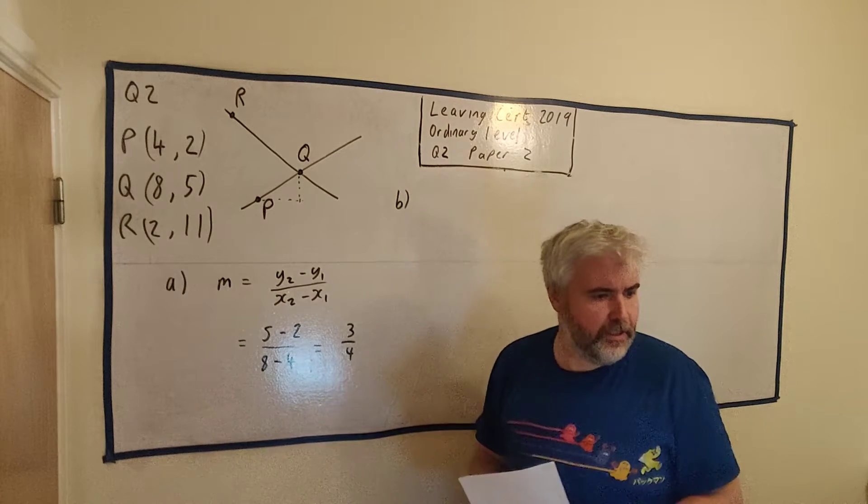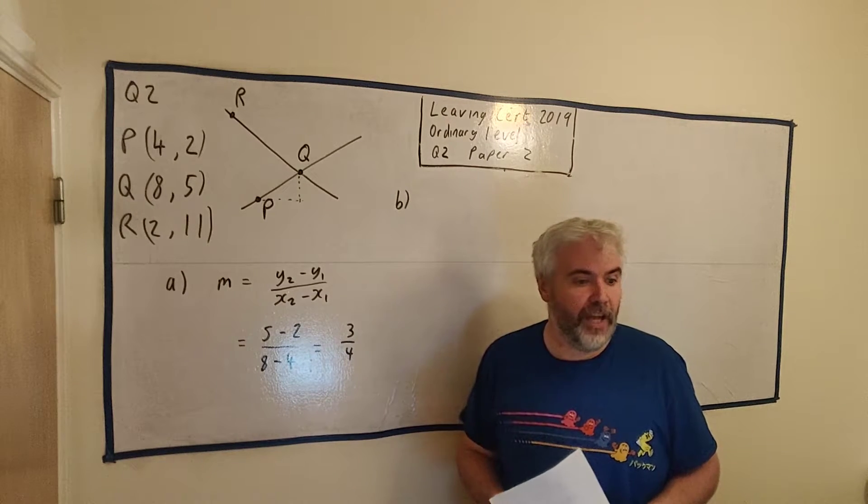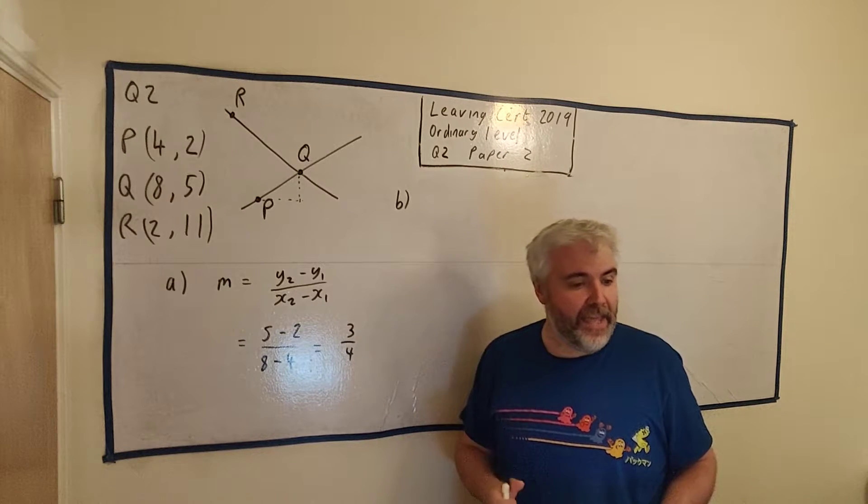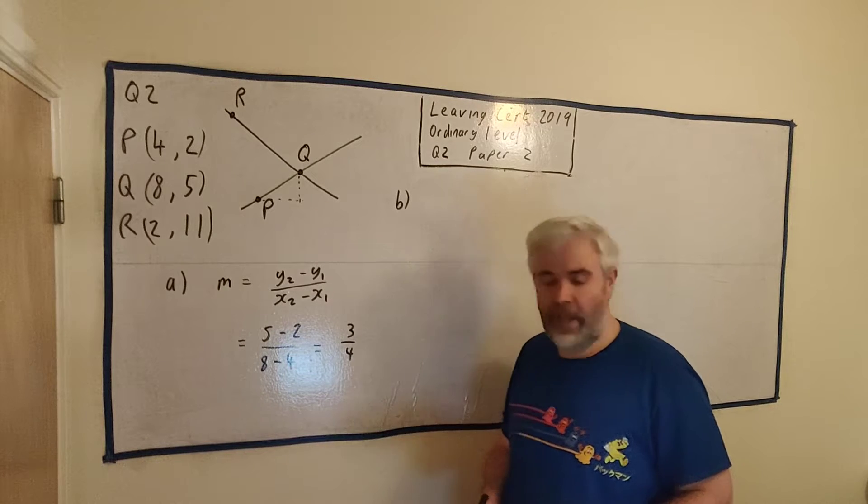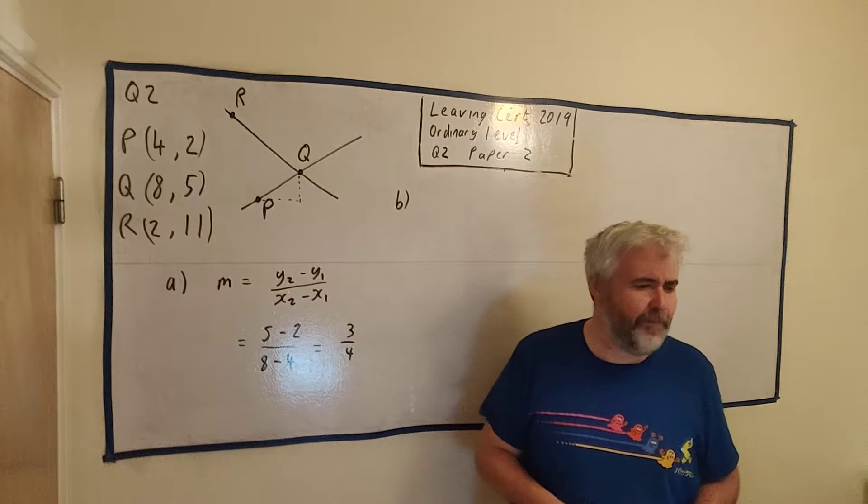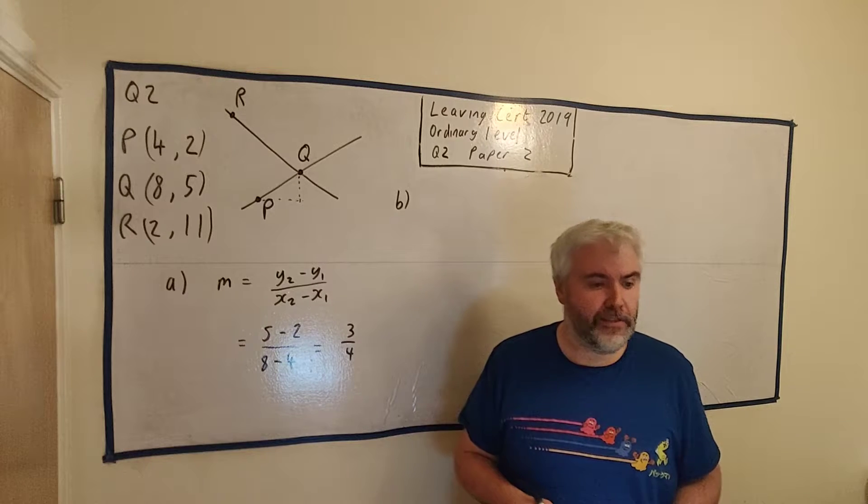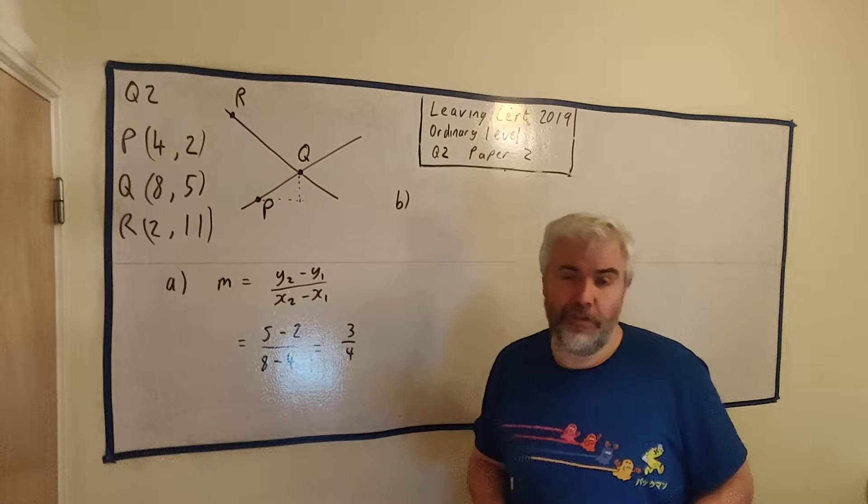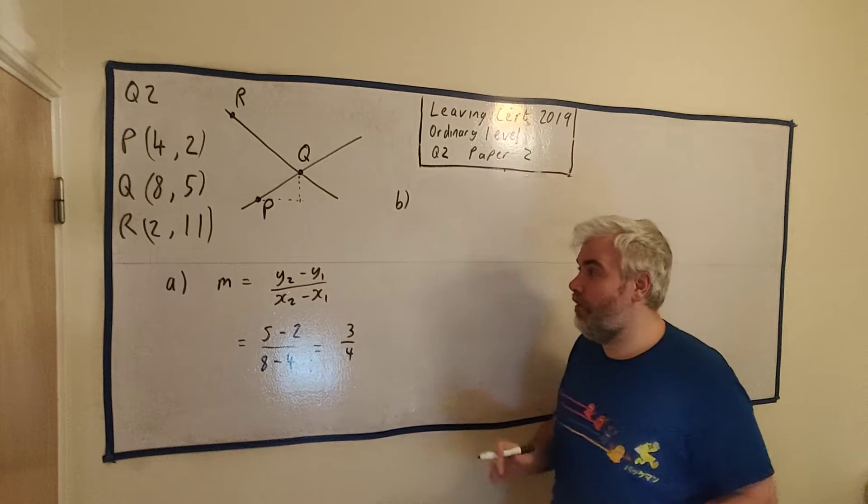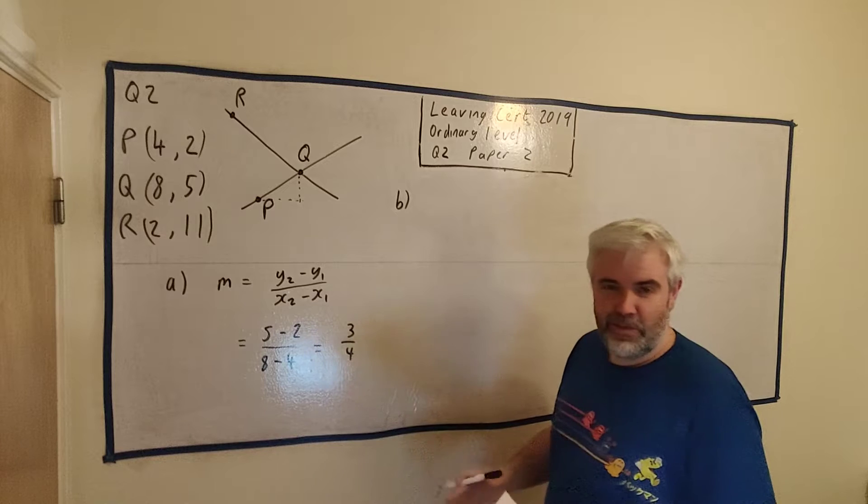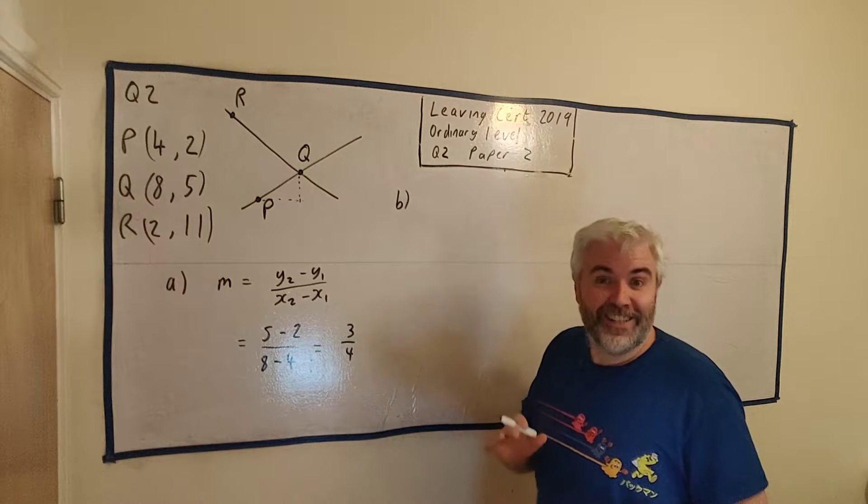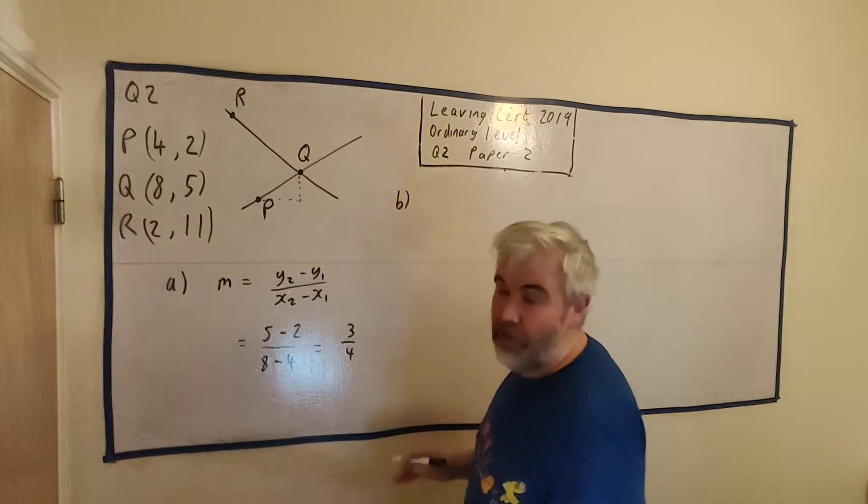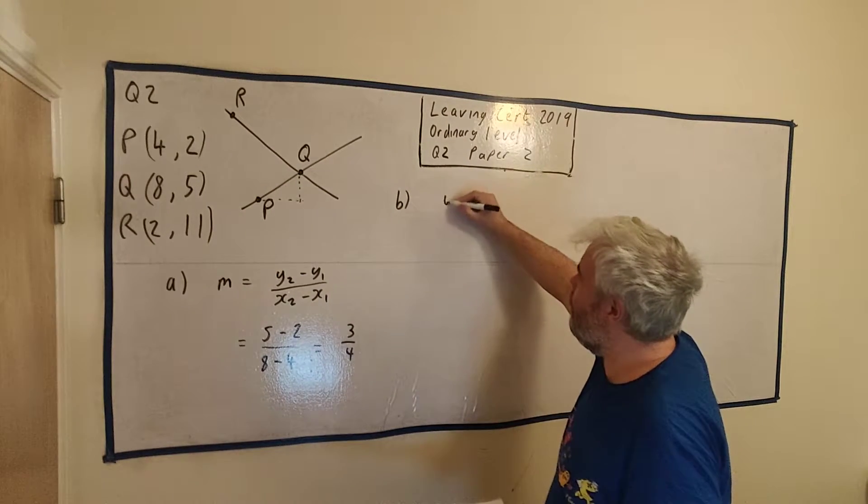Part B asks us to find the equation of the line PQ and give your answer in the form AX plus BY plus C equals 0. They also say A, B, and C are elements of the integers. You don't need to worry too much about that.